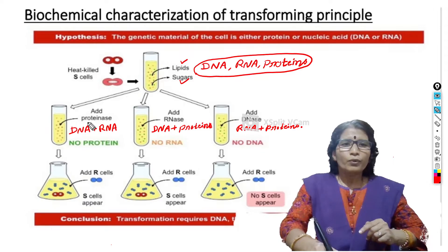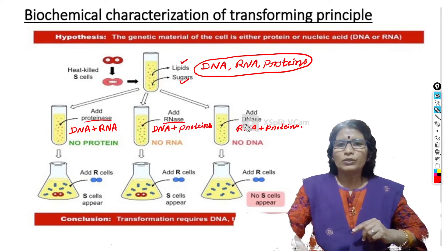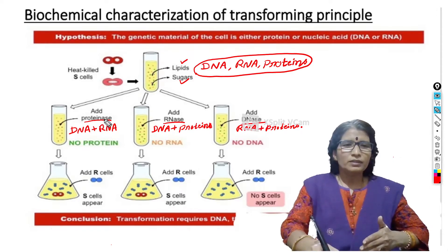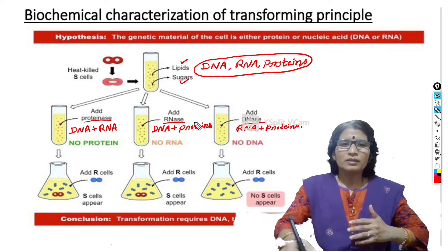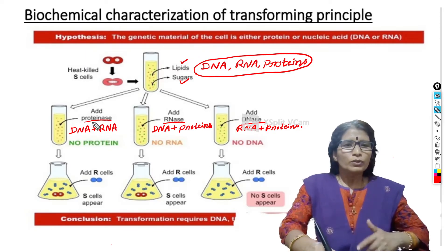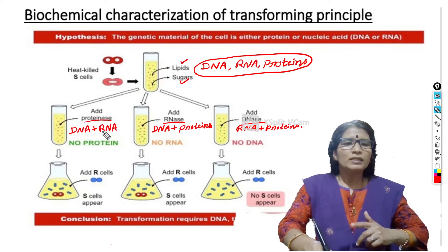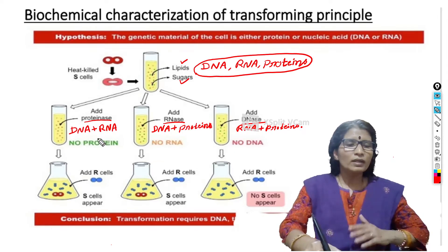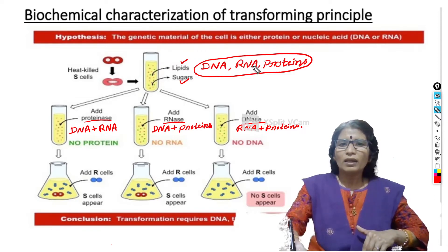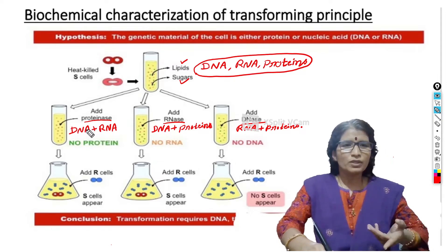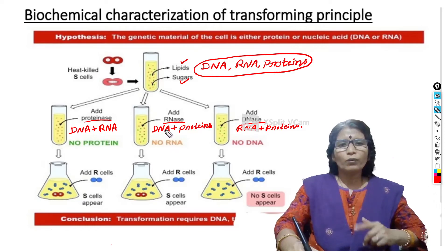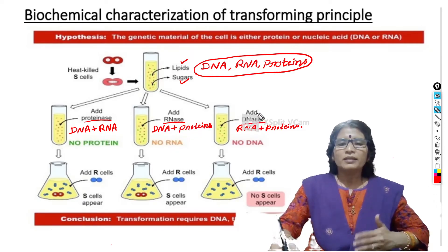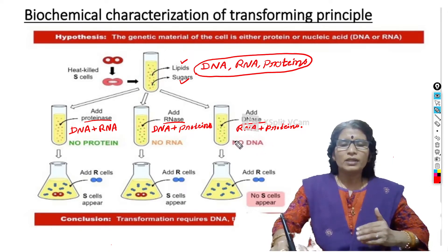To the first test tube they added proteinase; to the second test tube they added RNase; and to the third test tube they added DNase. These are enzymes — note that enzyme names end with -ase. Proteinase digests protein, so in the first test tube protein was completely digested, leaving only DNA and RNA. When RNase was added to the second test tube, RNA was completely digested, leaving only DNA and proteins. When DNase was added to the third test tube, DNA was completely digested, leaving only RNA and proteins.